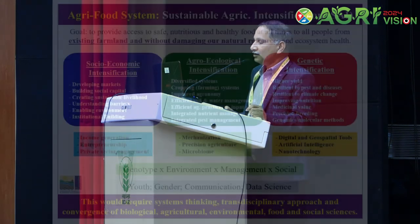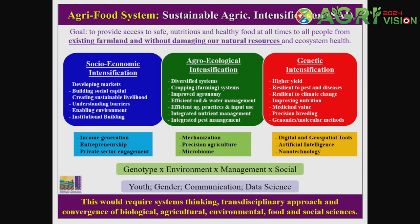The second component is agroecological intensification, focused on diversification, cropping systems, farming systems, improved agronomy, integrated nutrients, soil, water, and pest management practices — essentially how we manage the ecosystem and environment well. The third is socioeconomic intensification, focused on developing new markets, creating new opportunities, building social capital, and understanding barriers of adoption and institutional capacity building. It's not lack of technologies that is the issue — it's adoption of those technologies at a scale where they can impact food and nutrition security.